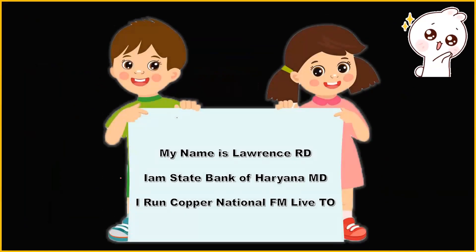Write the first sentence: 'My name is Lawrence R.D.' If you can't write along with me, just pause and write, or first listen and then copy the notes the second time you watch the video. My name is Lawrence R.D. Second line: 'I am State Bank of Haryana MD.' Repeat — My name is Lawrence R.D. I am State Bank of Haryana MD.